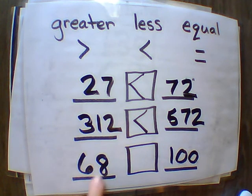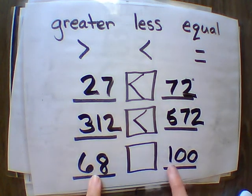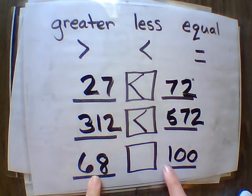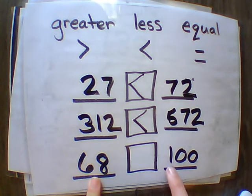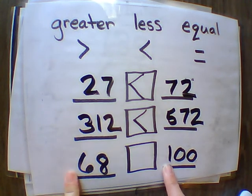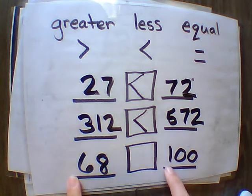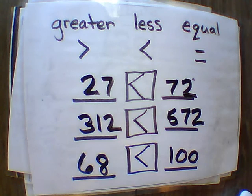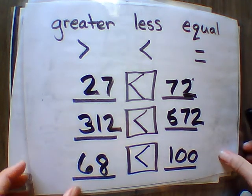I notice 68 only has two digits and 100 has three. So there's a hundred in the one spot. One is in 100. And if I went to the hundred spot in 68, there's zero. So one is greater than zero. So 68 is less than 100.